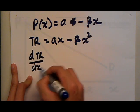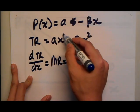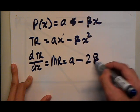So differentiate. I will get MR. Bring this power down, bring it down, get a. Bring this one down, get 2bx.